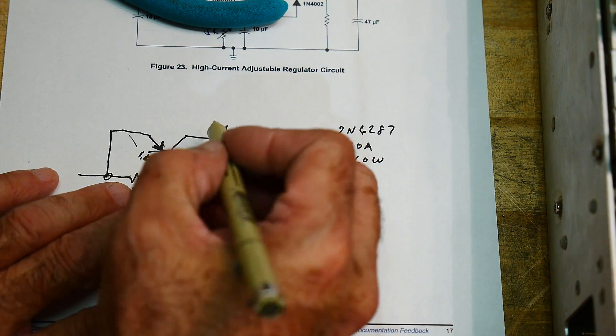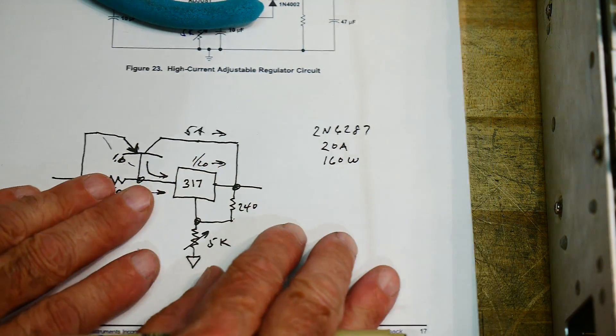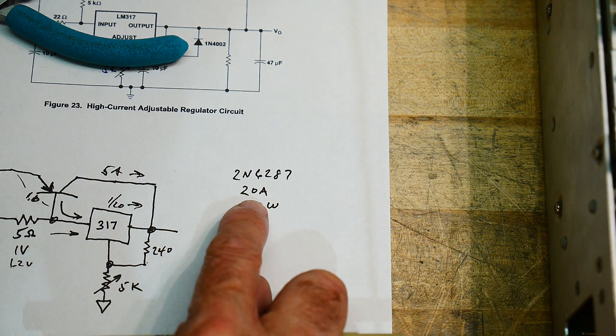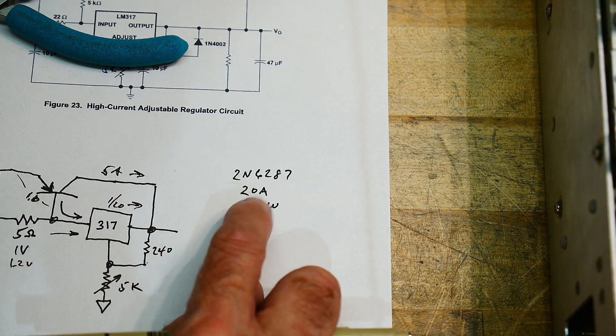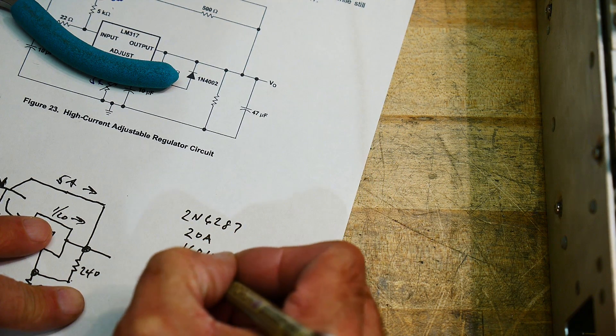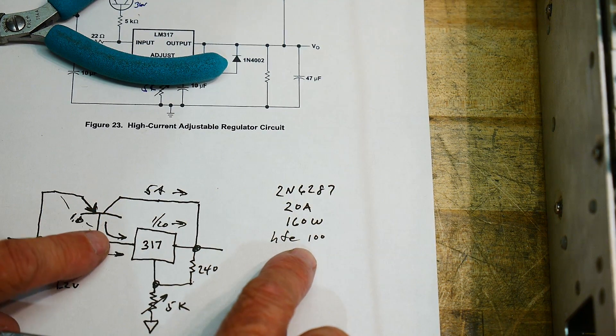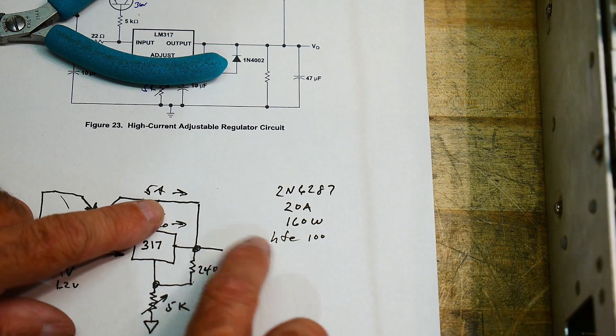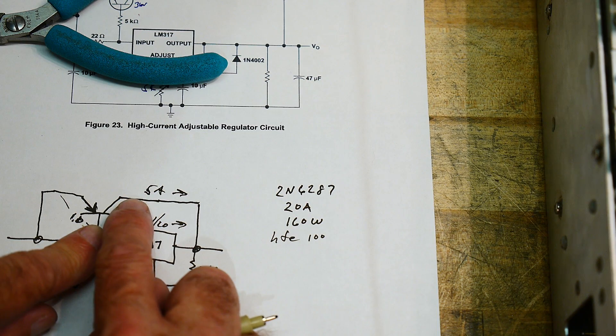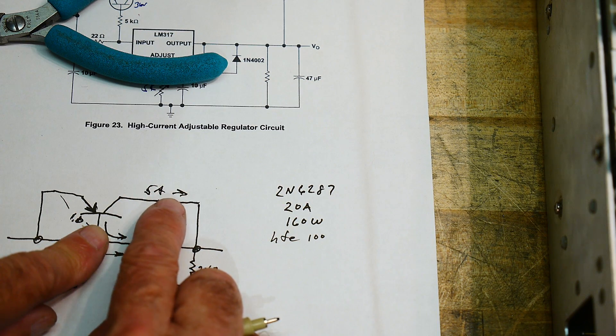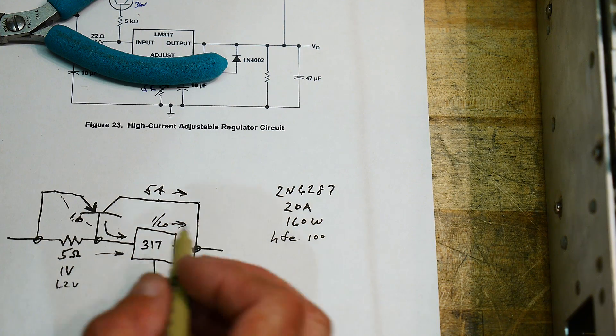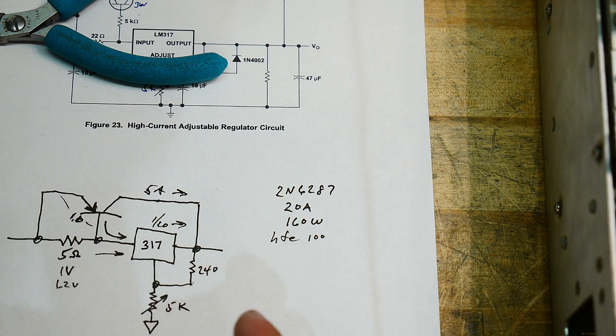The transistor I had in my junk bin was a Darlington PNP, a 2N6287, rated at 20 amps DC and 160 watts. It's a pretty healthy transistor. The cool part is that the HFE is greater than 100 because it's a Darlington, so you only have one-hundredth of the base current. Instead of 5 amps, you only have 50 milliamps, very little current here, so the 317 can handle that just fine.